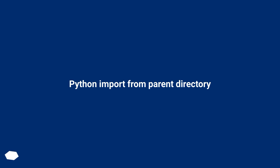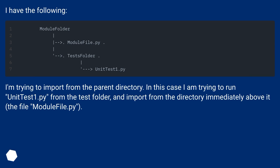Python import from parent directory. I have the following setup. I'm trying to import from the parent directory. In this case I am trying to run unit_test_1.py from the test folder, and import from the directory immediately above it — the file module.py.